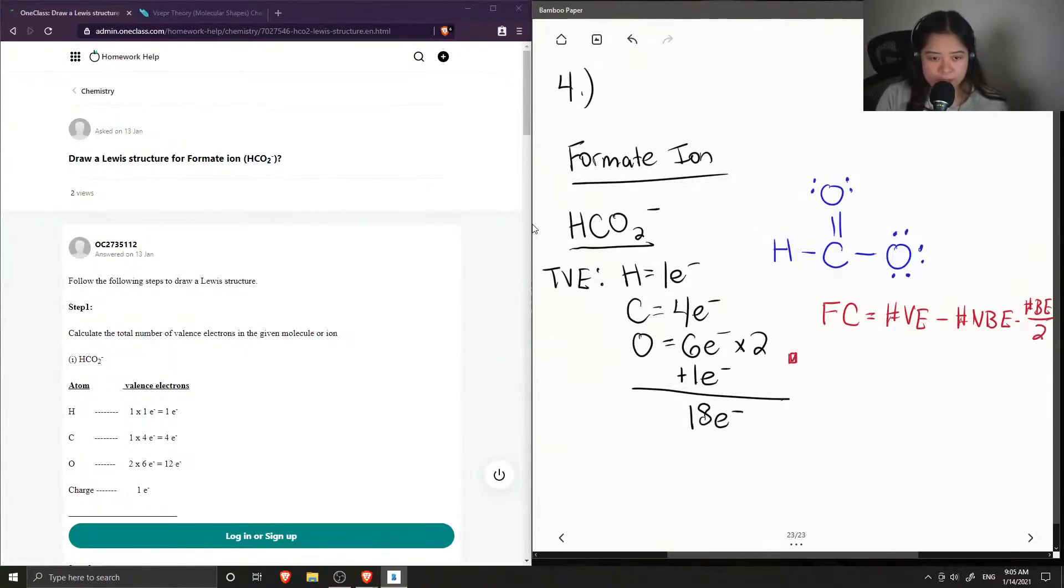Okay, so let's see what the formal charge of hydrogen is. So hydrogen has one valence electron. There are no lone pairs on hydrogen either. So there are zero non-bonding electrons. And finally, there's a single bond to the hydrogen. So we have two bonding electrons divided by two. So hydrogen has a zero formal charge.